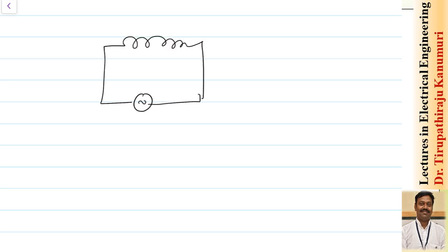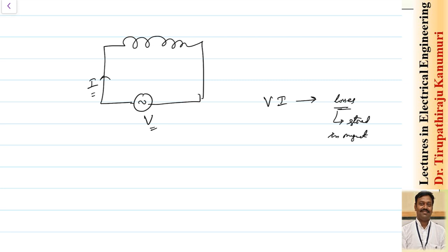Assume a voltage is applied to the coil and some current is passing through it. The total power supplied is the product v multiplied by i. Out of this power supplied from the source, part goes to losses and the remaining is stored in the form of magnetic energy, since an inductor can store energy as a magnetic field.